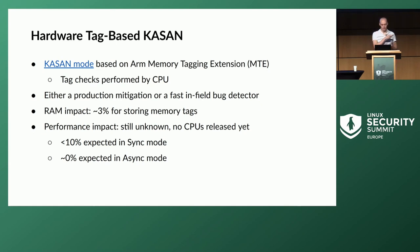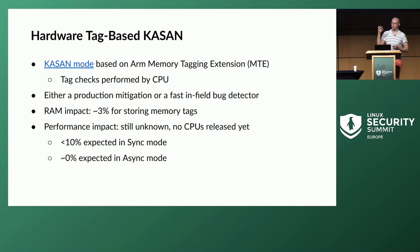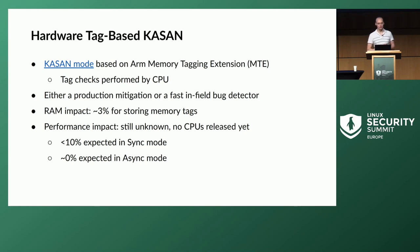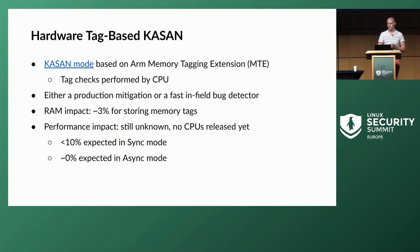Hardware tag-based KASAN is based on hardware memory tagging rather than software. It's implemented for ARM64 and relies on the ARM memory tagging extension (MTE). With MTE, validity checks of memory accesses are done by the CPU itself, making it very fast. The RAM impact is about 3% — for each 16 bytes of memory you have a 4-bit memory tag. Performance impact is still unknown since no ARM CPUs with MTE have been released yet. The sync mode (the more precise one) is expected to have about 10% overhead, while the async mode could have essentially negligible overhead.